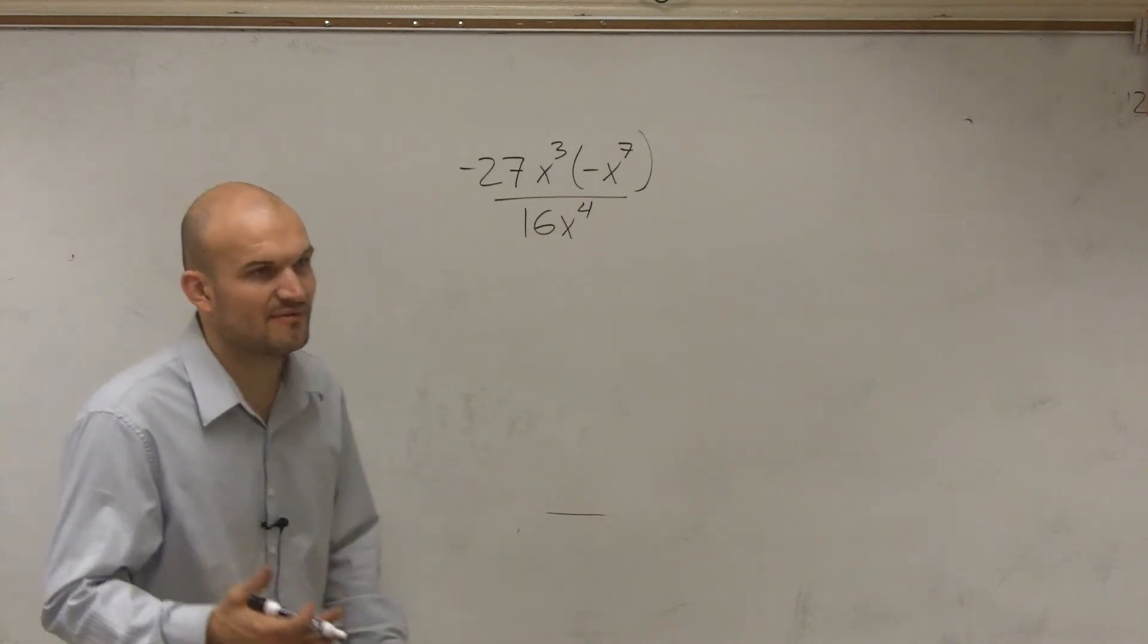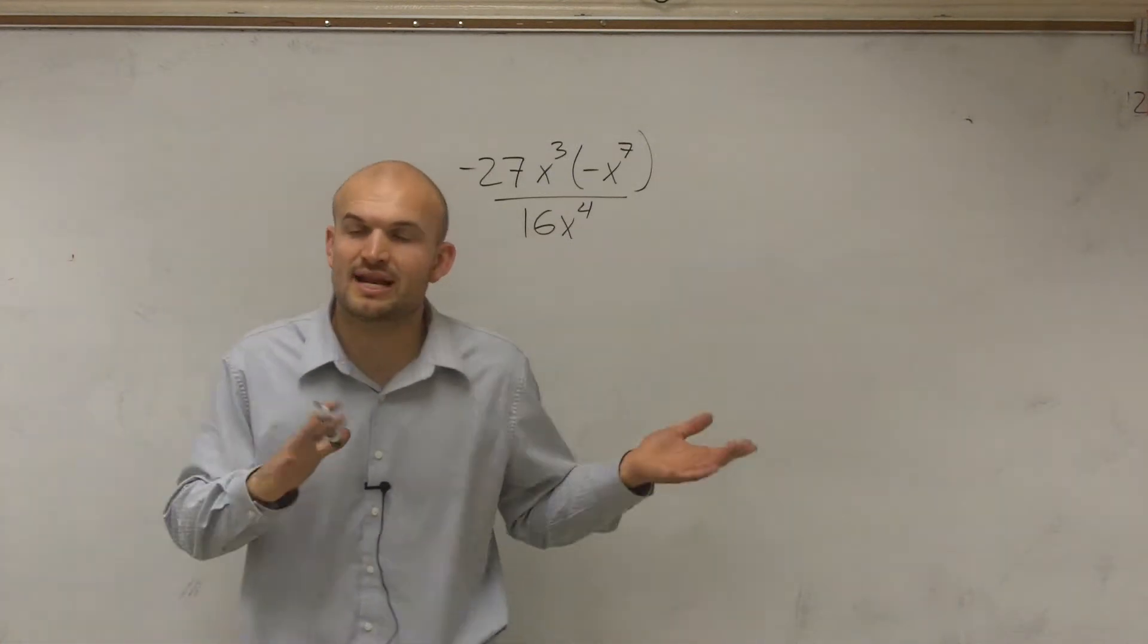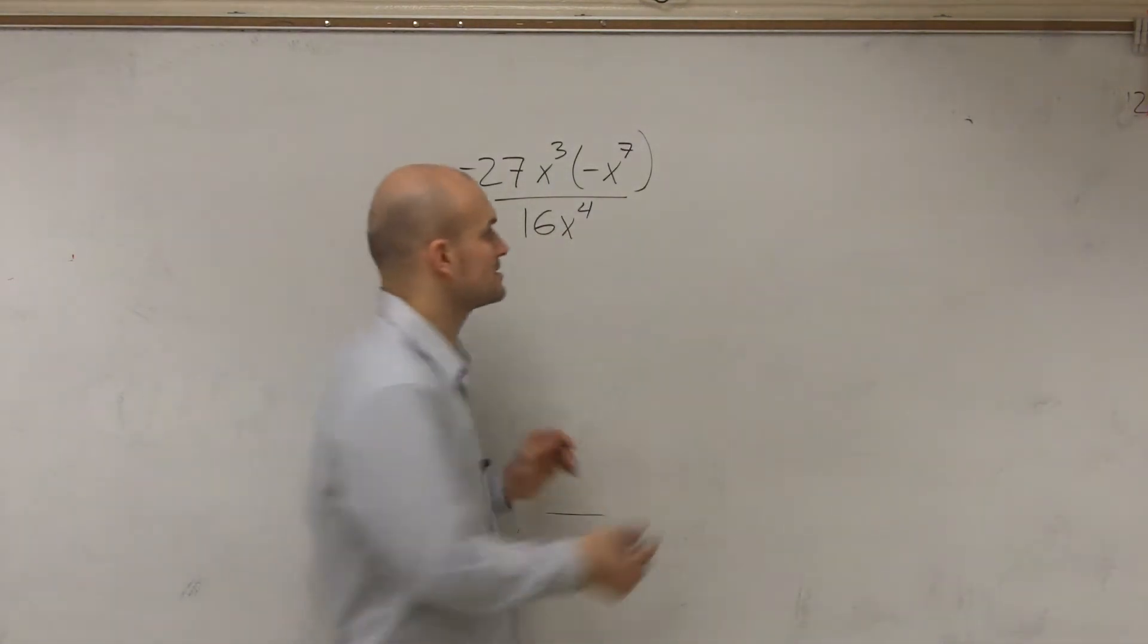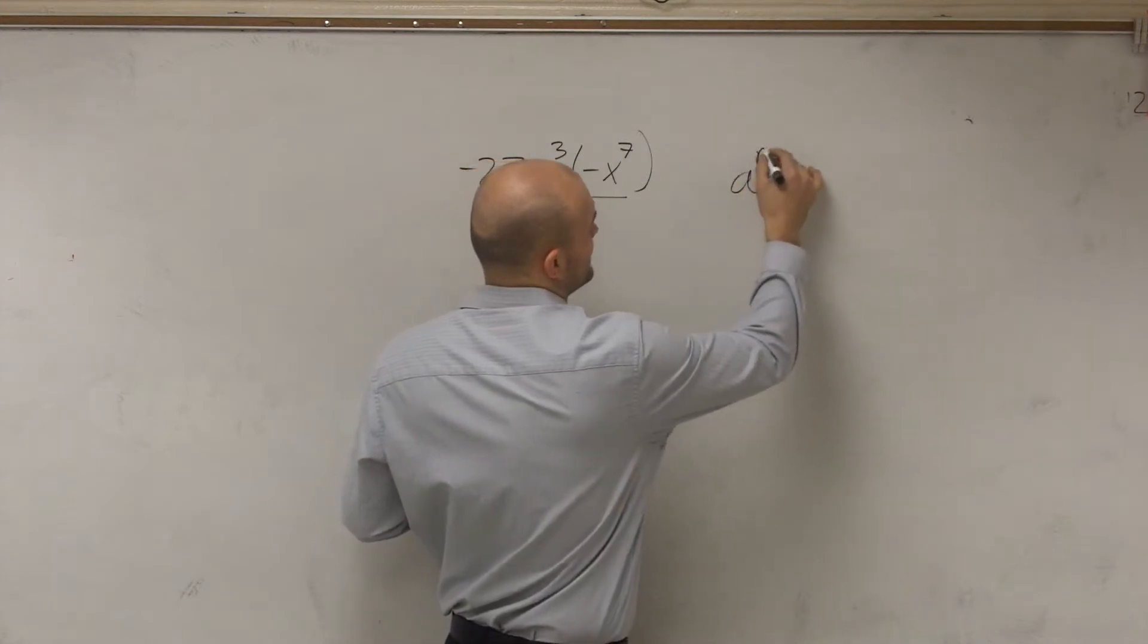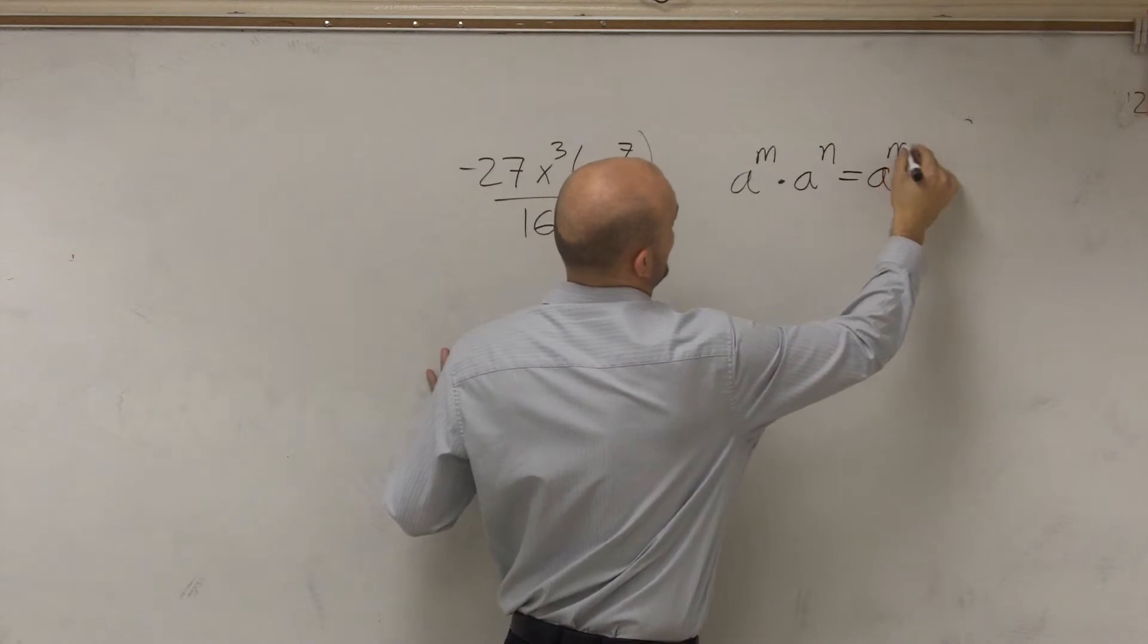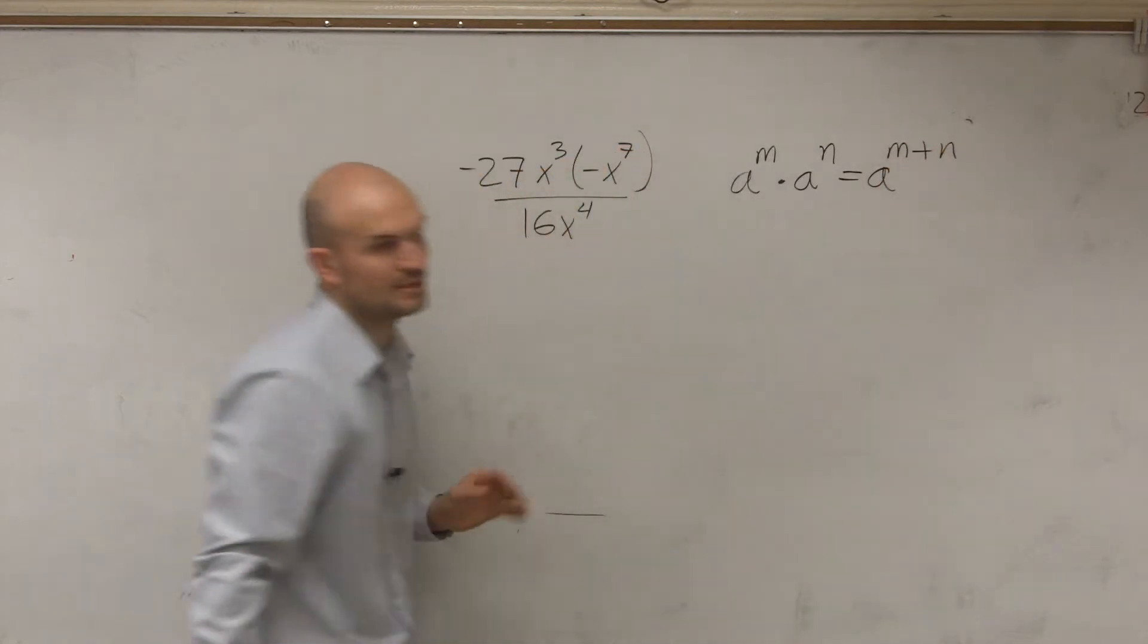So what I like to do is I'm simplifying exponents. There's a couple properties that I want to apply here. The first property is the product property of exponents. And what that states is if I have a to the m times a to the n, that means I'm going to add a to the m plus n.